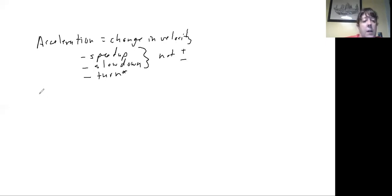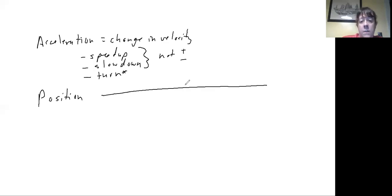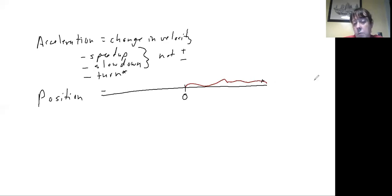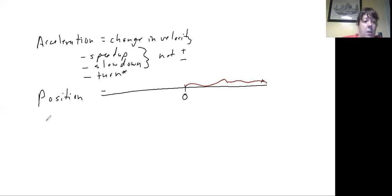To understand why, we want to go back and remember what our sign conventions were to begin with. For position, what does it mean to have a positive position? All it means is that on the number line, we have picked a zero for an origin, a positive side, and a negative side. If our position is positive, we are on the positive side of the line. All positions on the other side are negative.